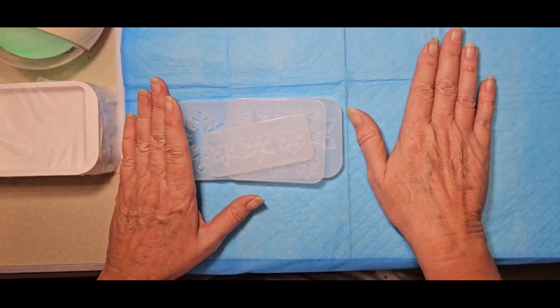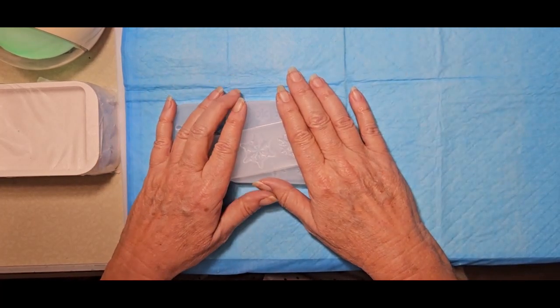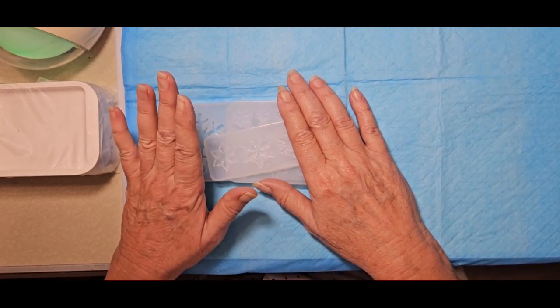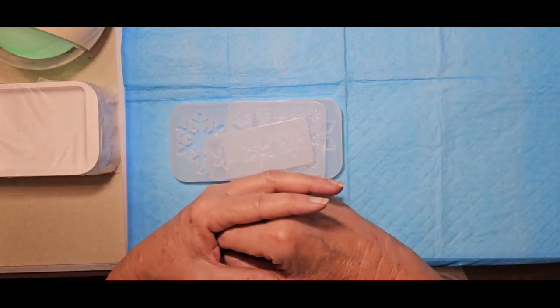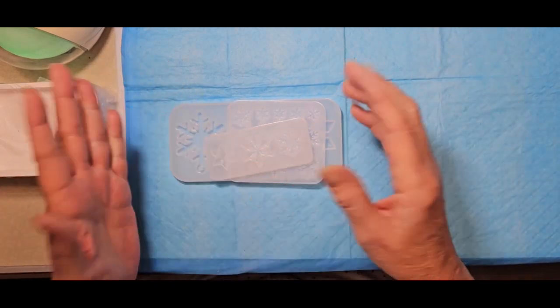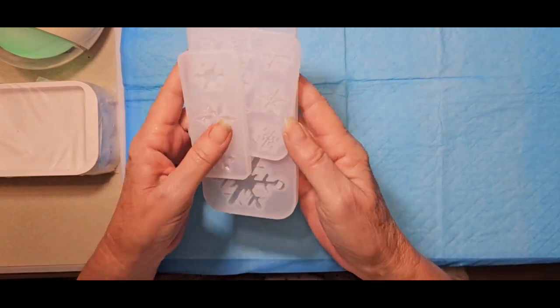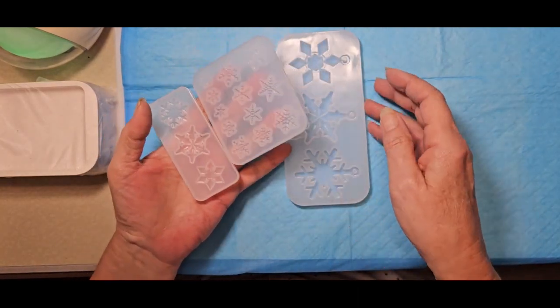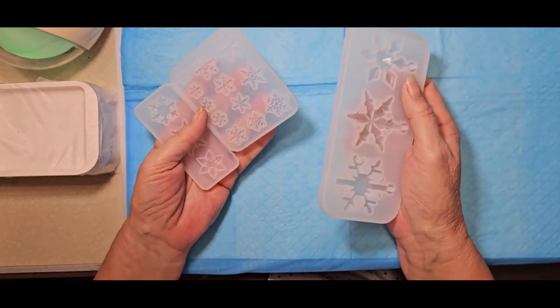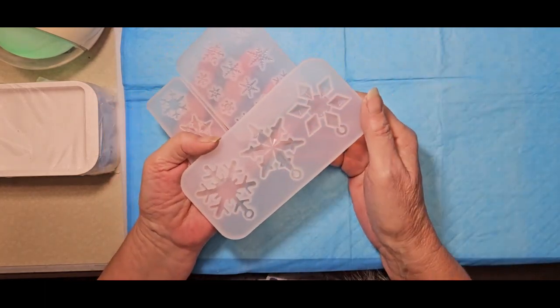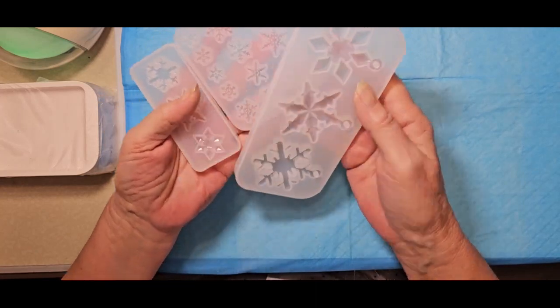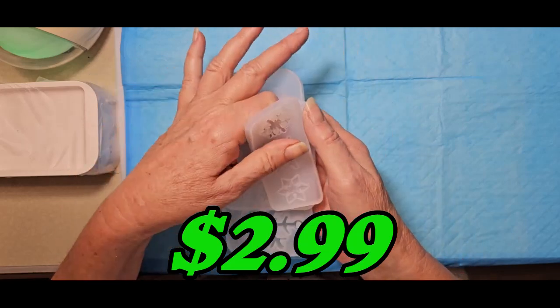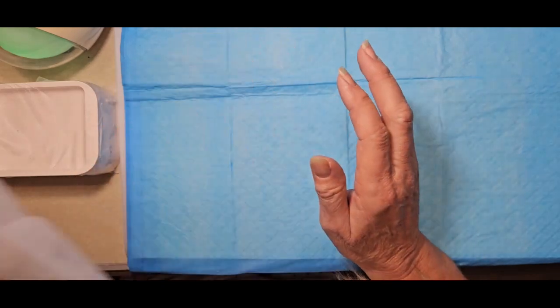What I did is I thought I was behind on Christmas items because I didn't have a lot of molds for Christmas, so I went ahead and ordered these three different sized snowflakes. Well, lo and behold, I already have these, but I ordered them again so next year I have more. This three-mold set came to $2.99, so I thought that was a good bargain.